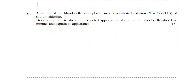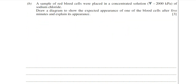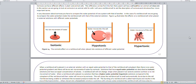Moving on to part B. You're told that a sample of red blood cells were placed in a concentrated solution with a water potential of minus 2000 kilopascals — a sodium chloride solution. You are asked to draw a diagram showing the expected appearance of one blood cell after five minutes and explain its appearance. There are potentially three types of diagrams you could draw. Pulling up the notes, there are red blood cells bathing in isotonic, hypotonic, and hypertonic solutions.